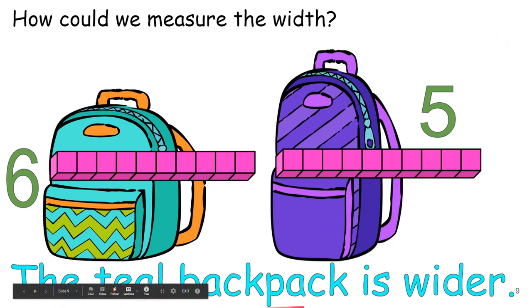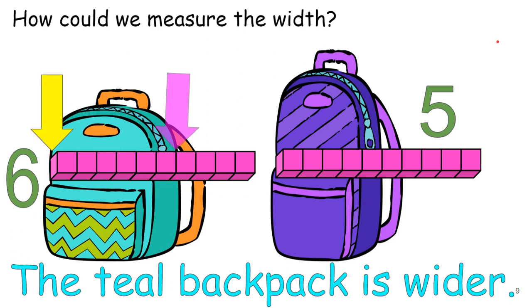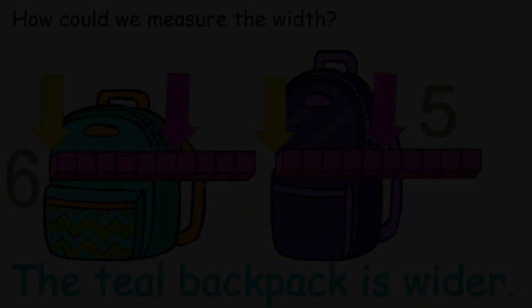So the purple backpack is five cubes wide, and the teal backpack is six cubes wide. So we say the teal backpack is wider. And we could also say the purple backpack is more narrow. That's a big word, huh? And remember, we start at one side and we end at the other for both of them. You have to make sure that you're measuring correctly.